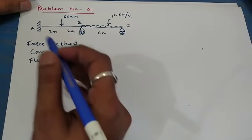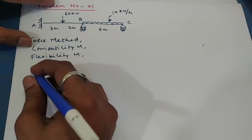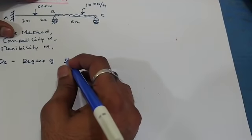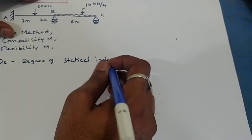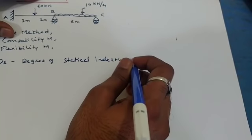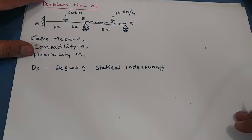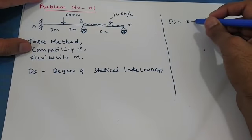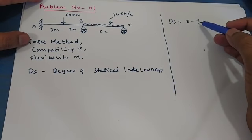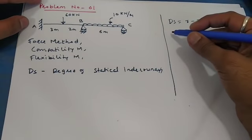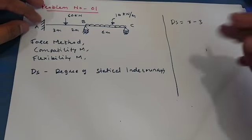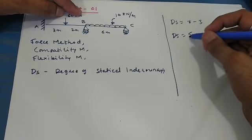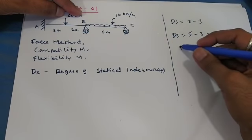When analyzing any indeterminate structure by force method, the very first step is to find DS, the degree of statical indeterminacy. In this problem we can determine it directly as DS = R minus 3, where R is the number of reactions. Taking all reactions into consideration, we have five reactions, so DS = 5 minus 3 = 2.